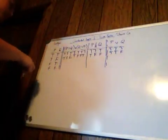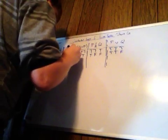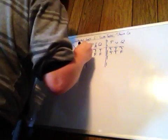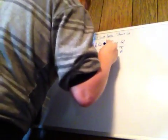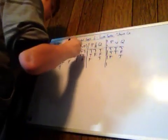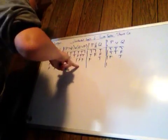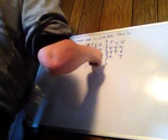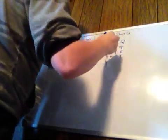Now the P's are false: F, T, T, F, F, T, F, T. T and F in a horseshoe makes F; F and T in a horseshoe makes T; T and F in a wedge makes T; F and T in an ampersand makes F; F and T in a wedge makes T.